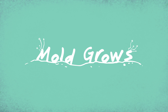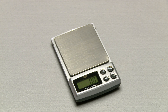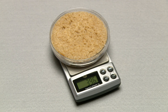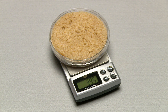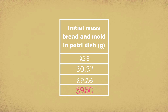Mold is alive, and it grows. Since it takes about a week for the bread to mold, let's flash back to when we started this investigation. We started by putting some moist bread in Petri dishes, then we weighed the bread in the Petri dishes. Our bread started out at 39.5 grams — that's before the mold started growing, right in line with the sample data from another classroom.